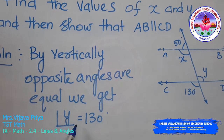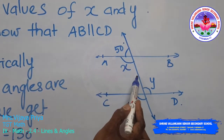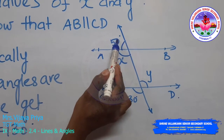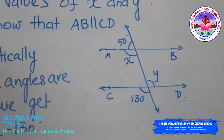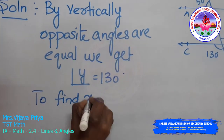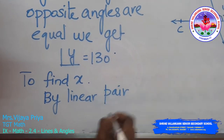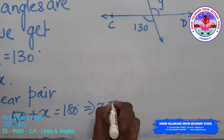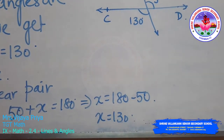Now I am going to find the value of x. A ray stands on a straight line, so 50 degrees and x are two adjacent angles standing on a straight line. Using the linear pair property: x plus 50 is equal to 180 degrees, which implies x is equal to 180 minus 50. So I got x is equal to 130 degrees.